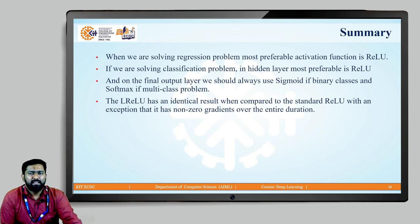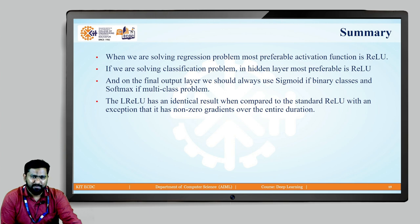In summary, we have studied activation functions. The main purpose of an activation function is to introduce non-linearity. ReLU is the most useful activation function used in hidden layers. For the output layer: if it is a regression problem, we use linear activation; for binary classification, we use sigmoid; for multi-class problems, we use softmax. Leaky ReLU solves the dead neuron problem. Thank you.